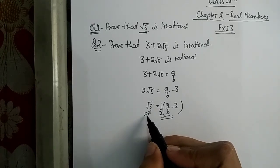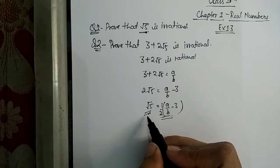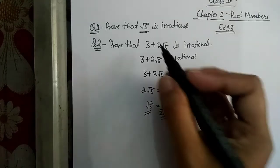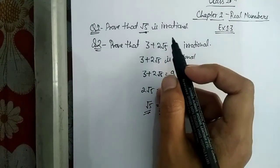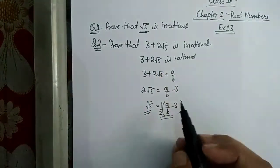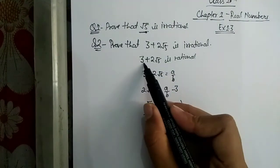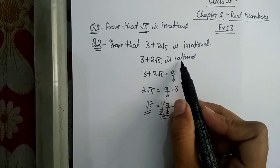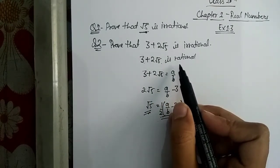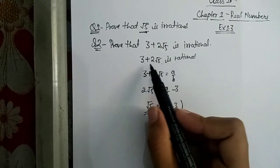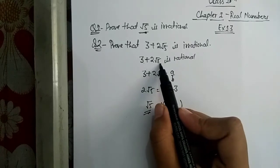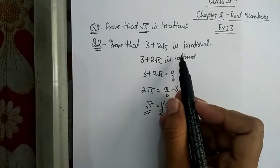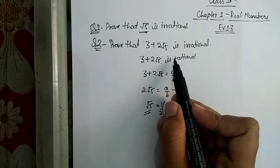But this contradicts the fact that √5 is irrational. Hence, our assumption that 3 + 2√5 is rational is false — it is wrong. Therefore, 3 + 2√5 is irrational, not rational.